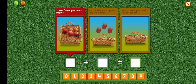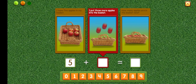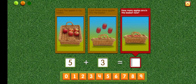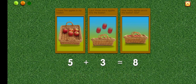I have five apples in my basket. Five. I put three more apples into the basket. Plus three. How many apples are in the basket now? Equals eight. Five plus three equals eight.